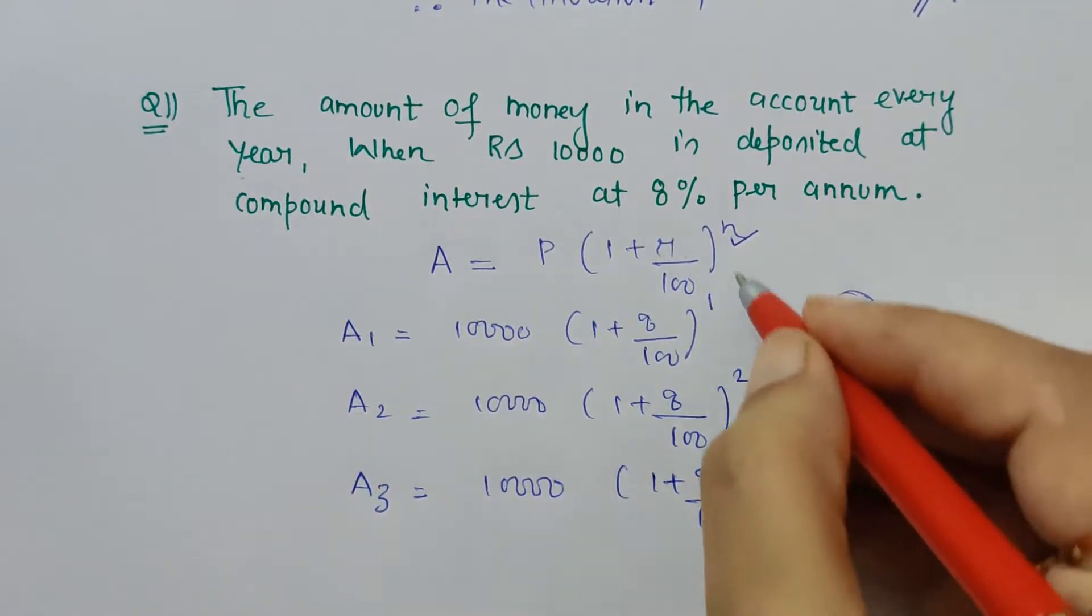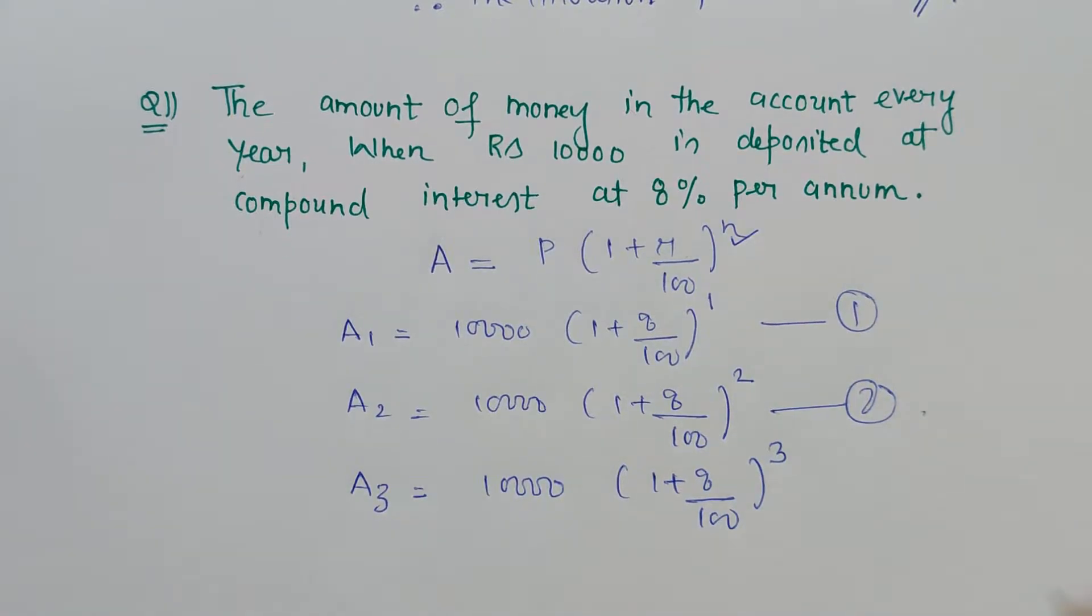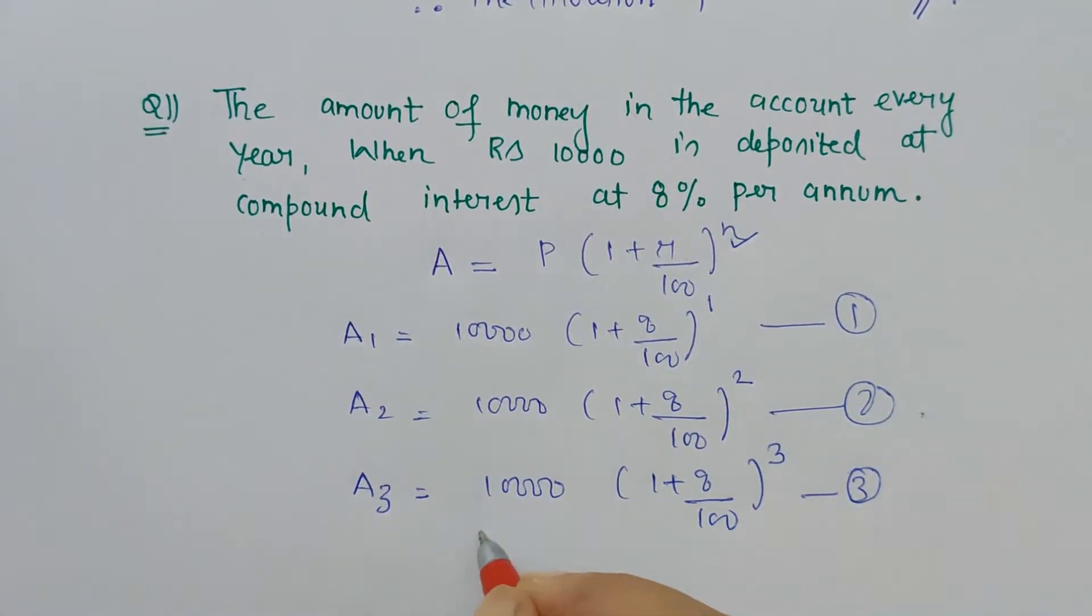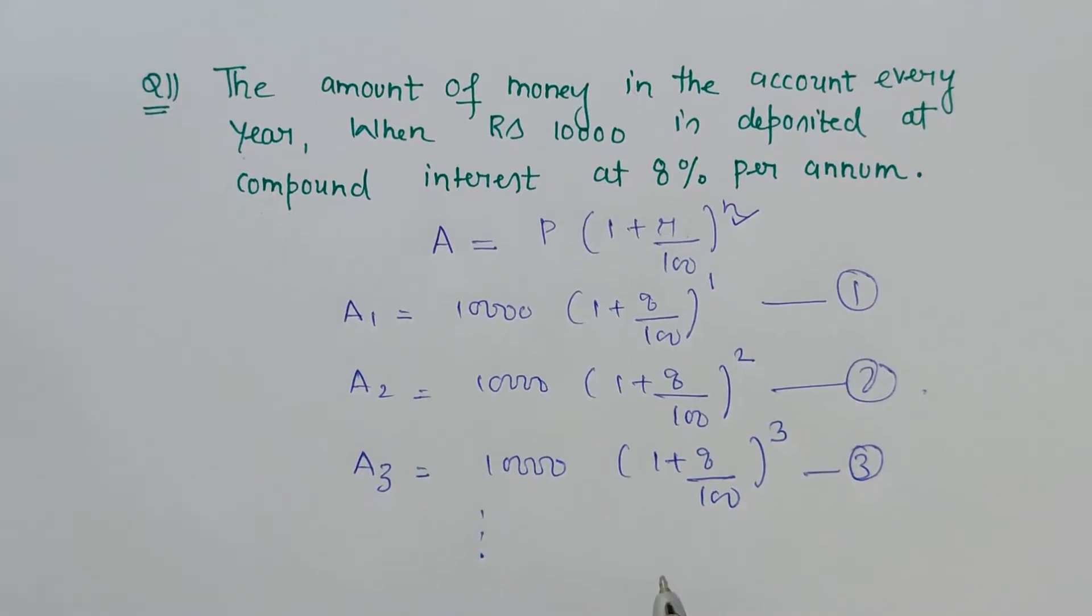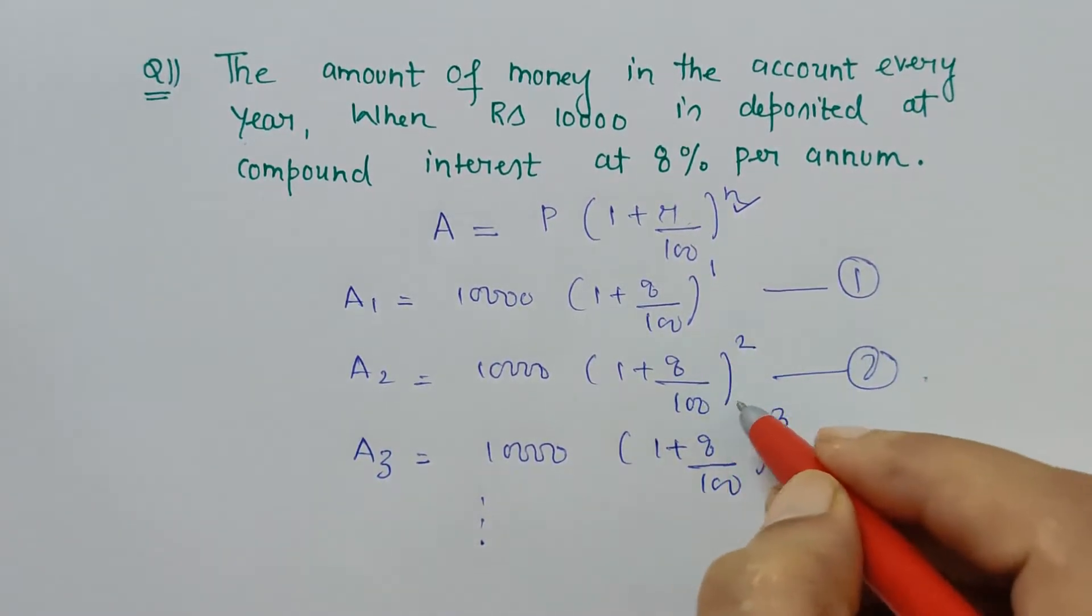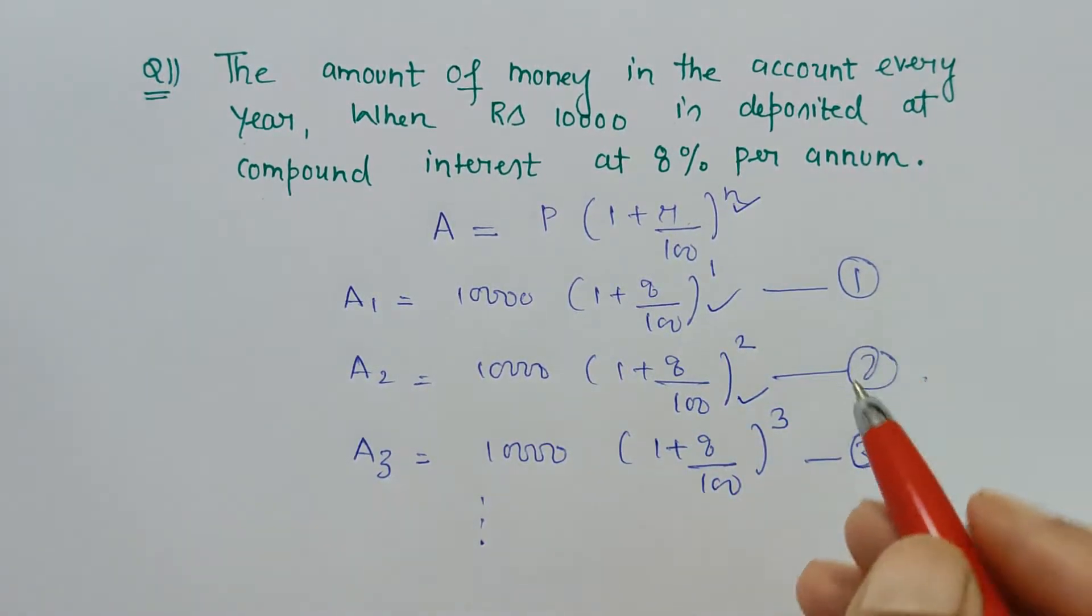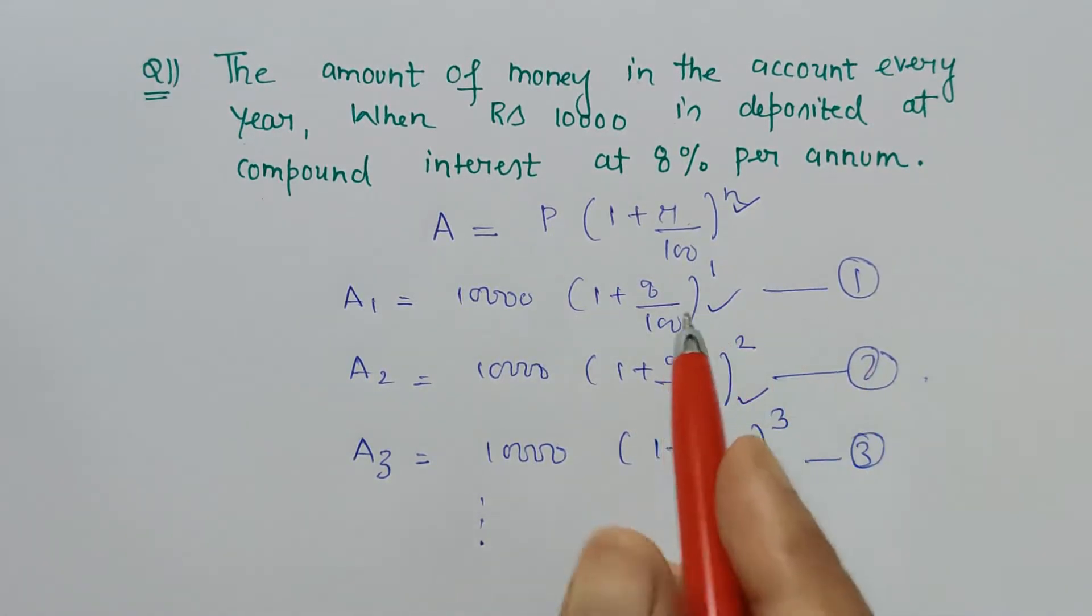Now when it comes to third year, I have 10,000, the principal amount, (1 + 8/100)^3 because now my n is 3, the year we are talking about. So it goes on like this.